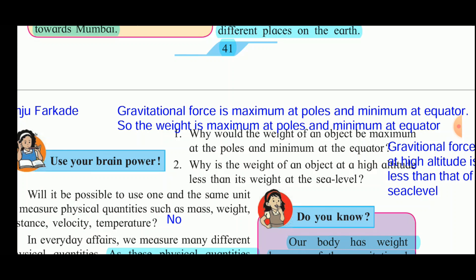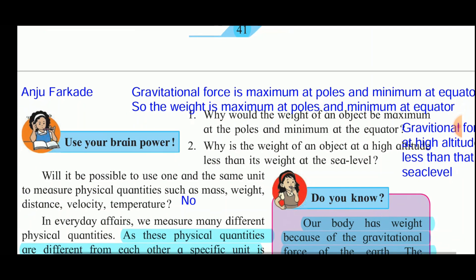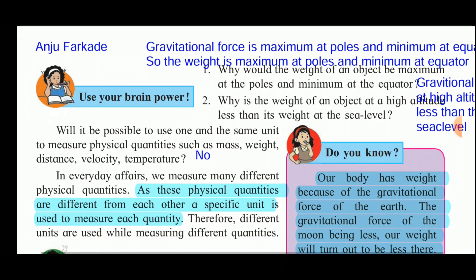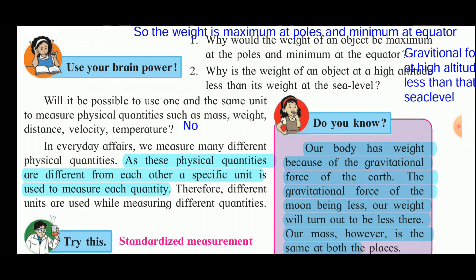Can one and the same unit be used to measure physical quantities such as mass, weight, distance, velocity, and temperature? No — the same unit cannot be used to measure different physical quantities. Different physical quantities have different units. In everyday affairs we measure many physical quantities, and since these quantities are different from each other, their units of measurement will also be different.